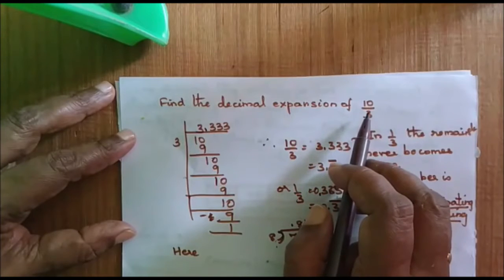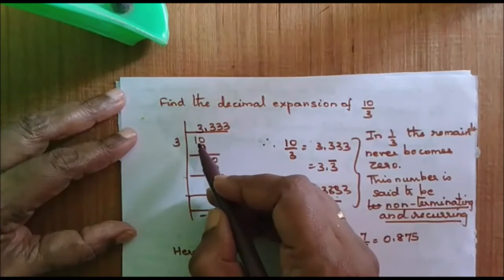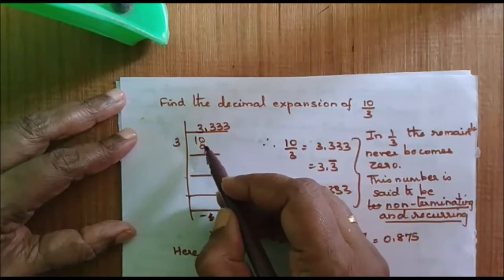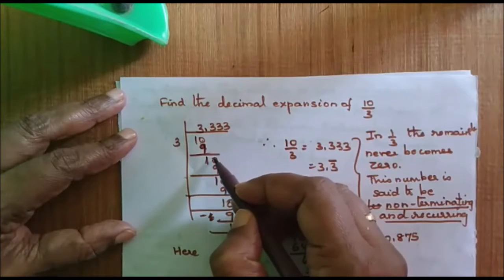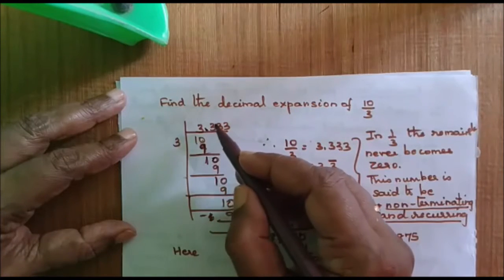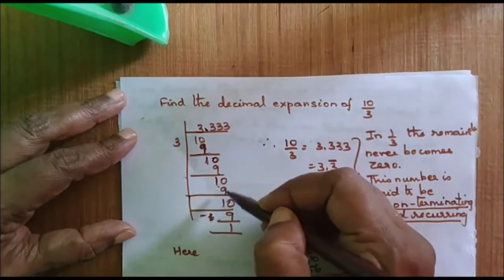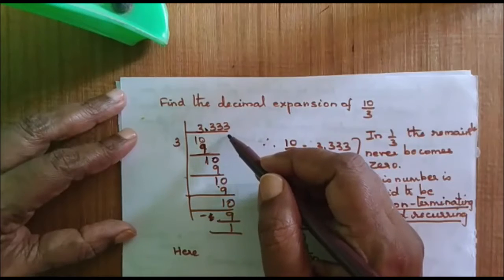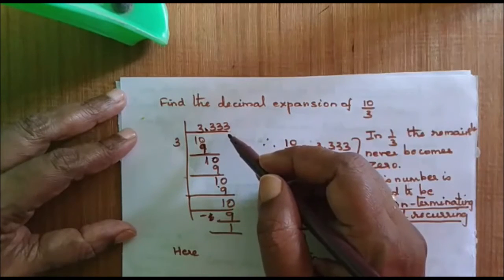We have to divide 10 by 3. I will write 10 inside and 3 outside. 3 will go in 10, 3 times. 3 times 3 is 9. The remainder is 1. Add a 0 here, it becomes 0.3. Then again it is 9, remainder is 1, and so on. My 3.33 — the 3 keeps on recurring, the 3 goes on repeating.